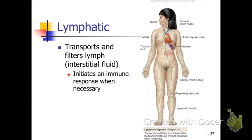The lymphatic system is shown in green — the universal color. Those green vessels are lymphatic vessels carrying a lymphatic fluid called lymph or interstitial fluid. The lymphatic system includes the spleen, the thymus, the tonsils, and a number of other structures we'll come across as we go through the course.